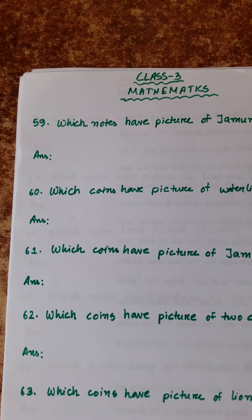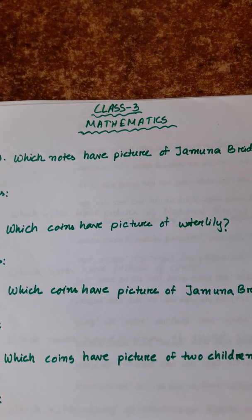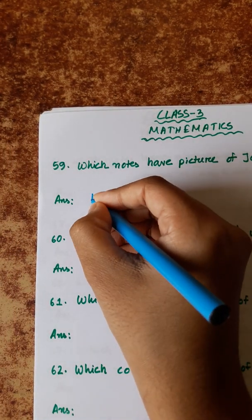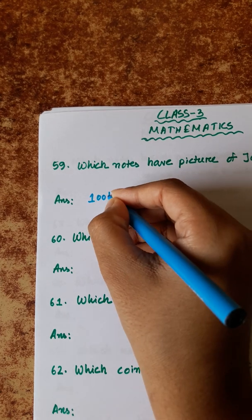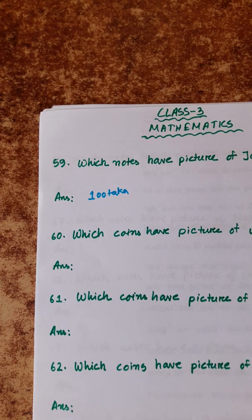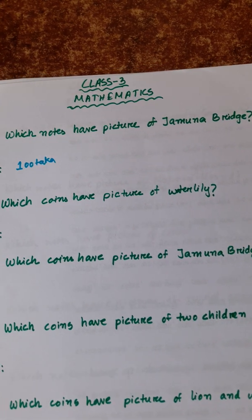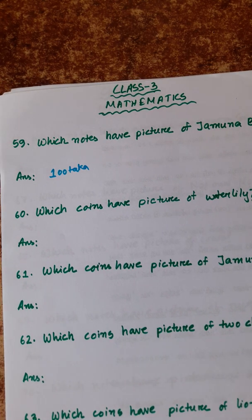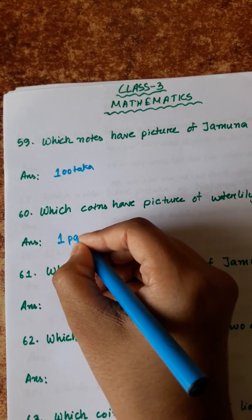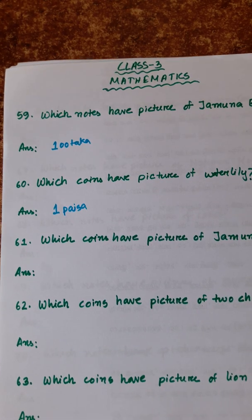Number 59: which notes have the picture of Jamuna Bridge? It will be the 100 taka note. Number 60: which coins have the picture of water lily? It is the 1 paisa coin.